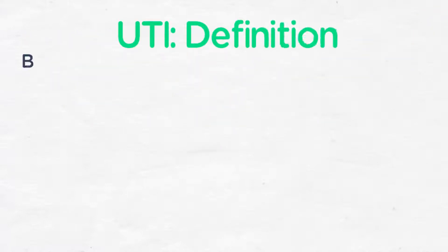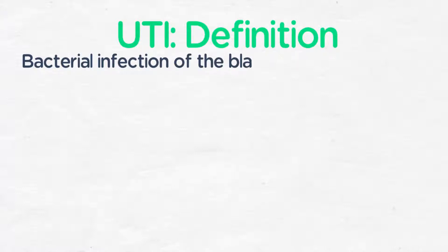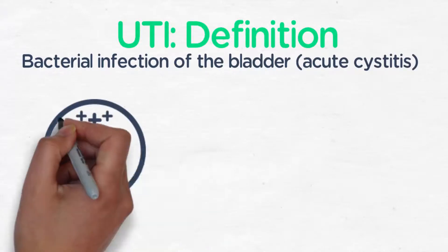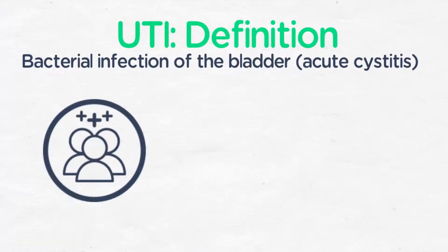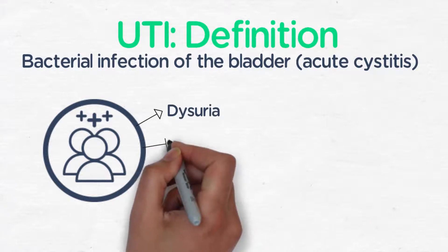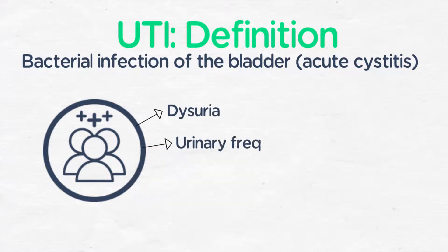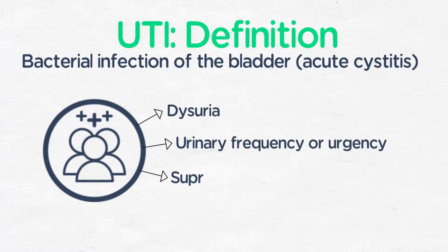Urinary tract infection, or UTI, is bacterial infection of the bladder, i.e. acute cystitis. Symptoms of UTI include painful urination, urinary frequency or urgency, and suprapubic pain or tenderness.